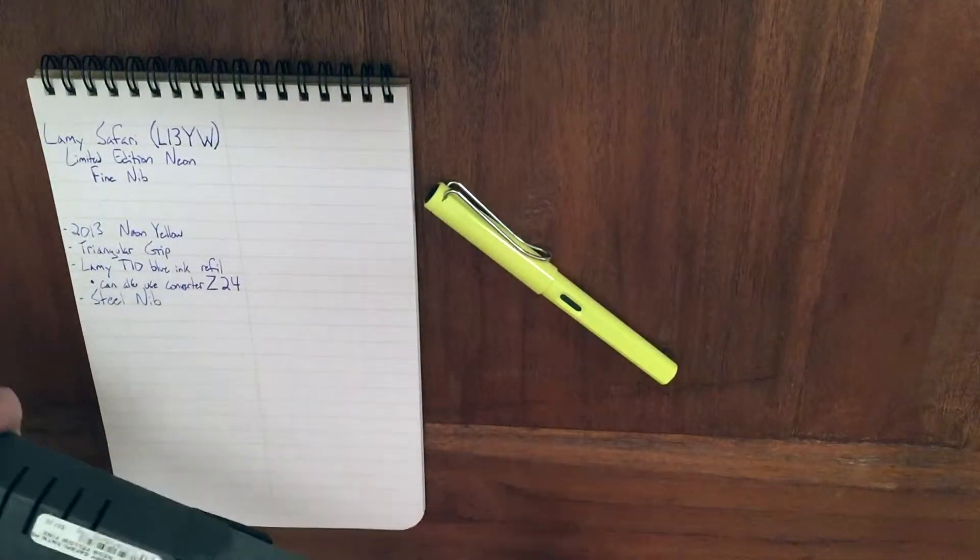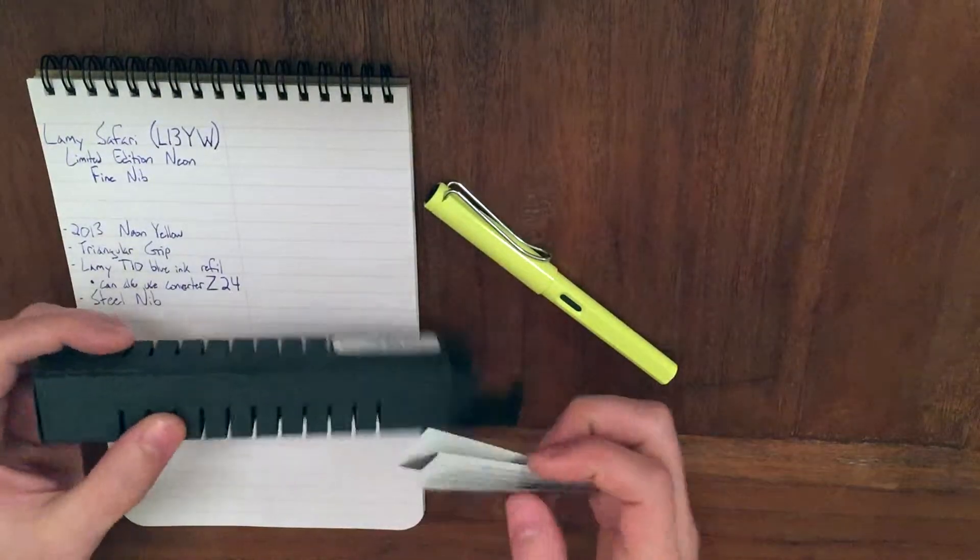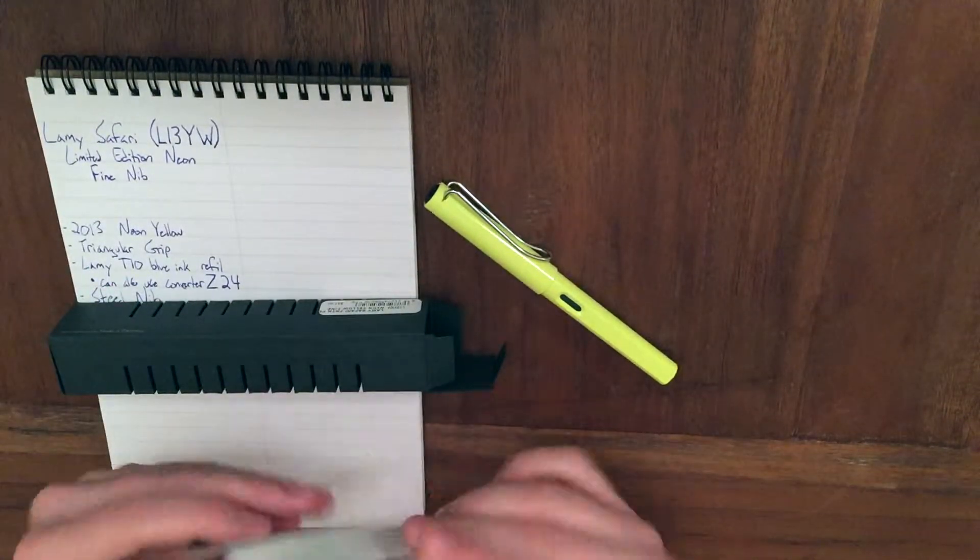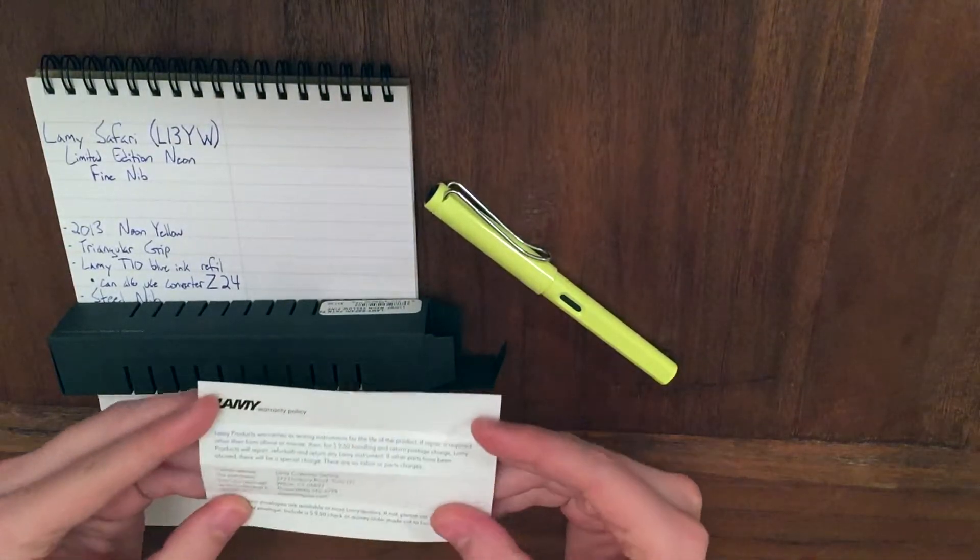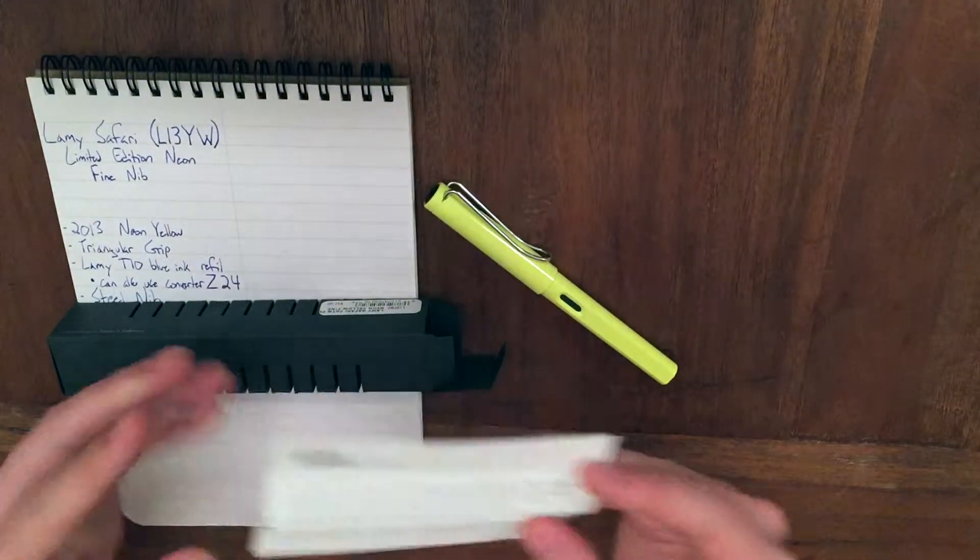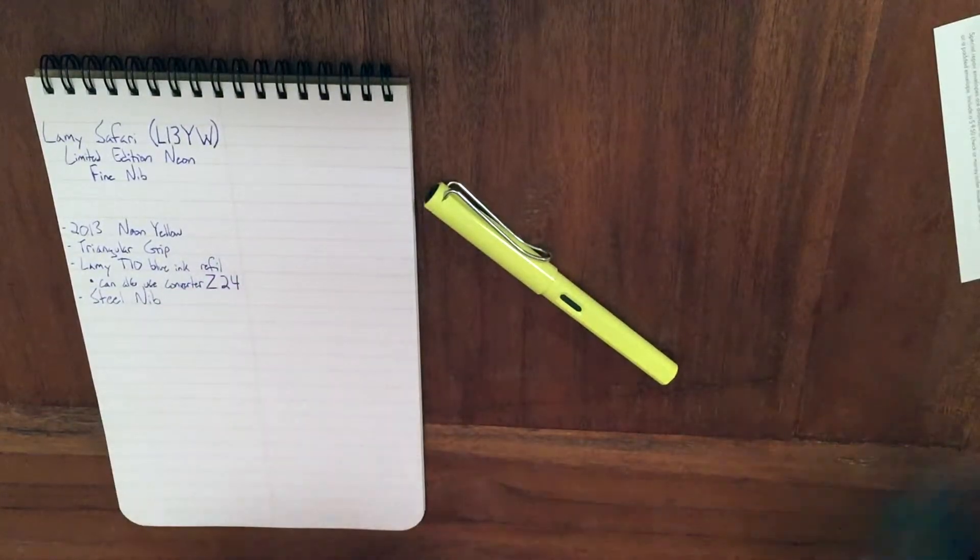And all it really comes with is just a cardboard separator here, a little bit of instructions or warranty policy, and then the ink cartridge itself which is already inside the pen.